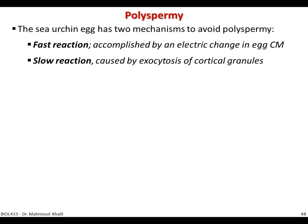What is polyspermy? Polyspermy is the ability of the egg to be fertilized by more than one sperm, and it must be avoided. The sea urchin has two mechanisms to avoid polyspermy: one fast and one slow. The fast reaction is accomplished by an electrical change in the egg cell membrane, while the slow reaction is caused by exocytosis of the cortical granules, as we will see in the next few slides.